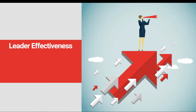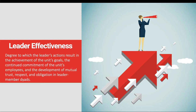Leader effectiveness is going to vary depending on who you ask. When we say leader effectiveness, we're talking about the degree to which the leader's actions result in the achievement of the unit's goals, the continued commitment of the unit's employees, and the development of mutual trust, respect, and obligation in leader-member dyads. To be effective, a leader has to help employees meet the goals — job performance needs to be high — and they also need to get employees to stay, where organizational commitment is an important part of leader effectiveness.